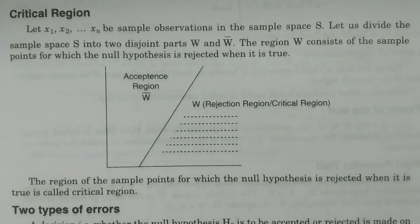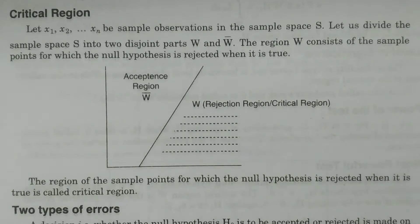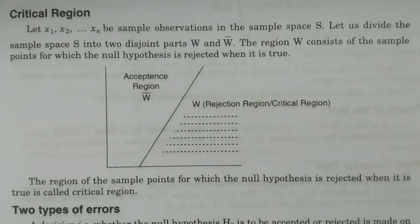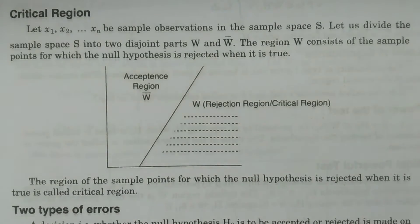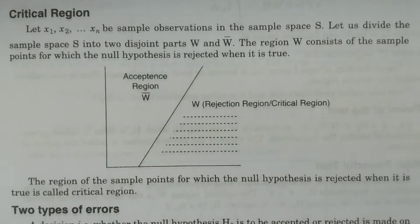We are testing two hypotheses. By formulating null and alternative hypotheses, we are testing the null hypothesis — whether it is accepted or rejected. That is our entire testing procedure. This entire study is conducted to determine which kind of decision is going to be taken for the formulated null hypothesis.